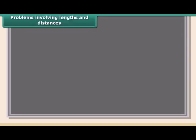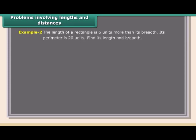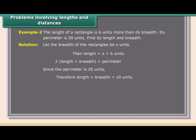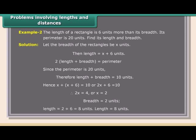Problems involving lengths and distances — Example: The length of a rectangle is 6 units more than its breadth and its perimeter is 20 units. Find its length and breadth. Let breadth = x; length = x + 6. Perimeter: 2(length + breadth) = 20, so length + breadth = 10. x + (x + 6) = 10; 2x + 6 = 10; x = 2. Breadth = 2 units, Length = 8 units.